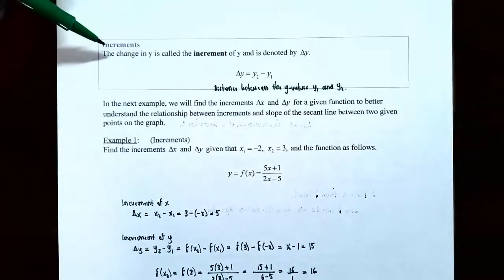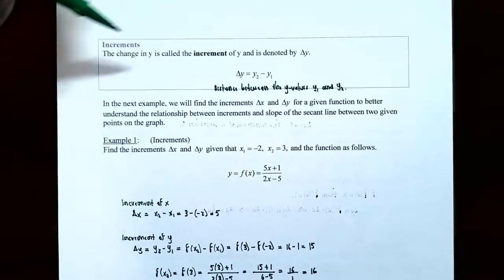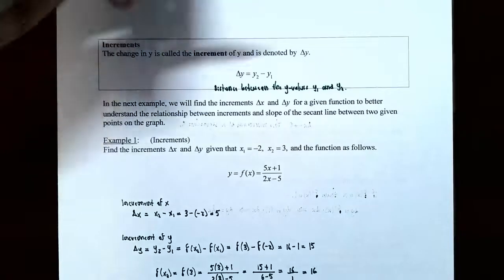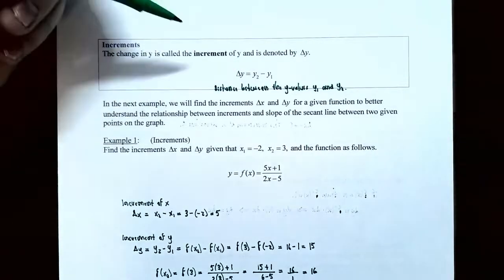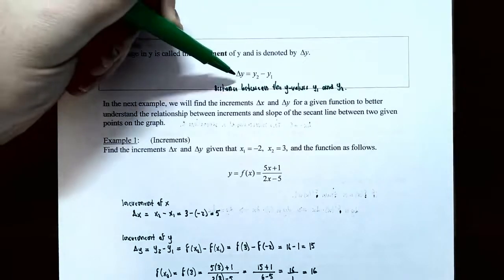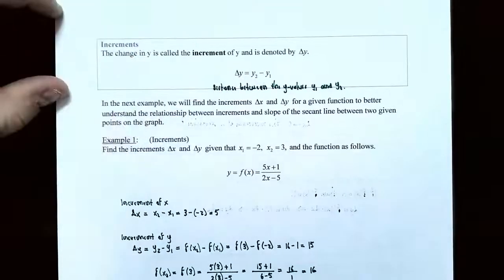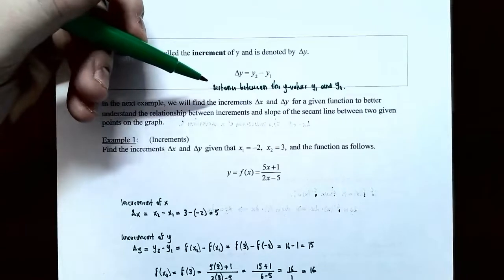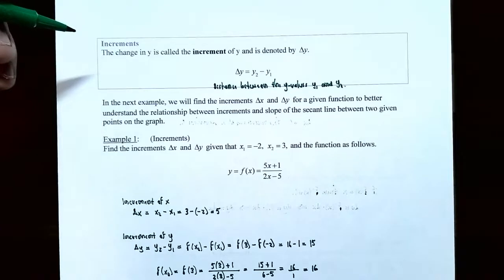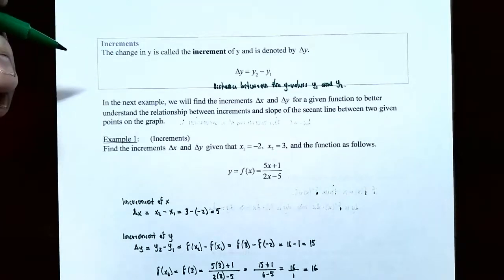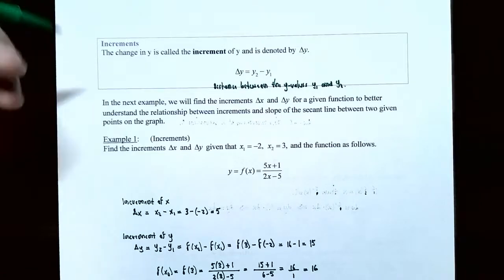On the other hand, the change in the y values is called the increment of y, denoted delta y. Delta y is y2 subtract y1, and it tells you the distance between the y values of the two points. In the next example we'll find the increments delta x and delta y to understand the relationship between increments and the slope of the secant line.